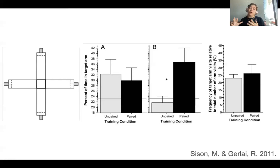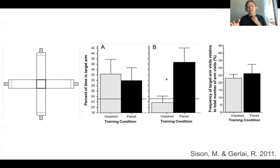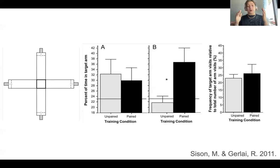In Panel C, we're looking at the frequency of target arm visits relative to the total number of arm visits between the paired and non-paired groups — the number of times they're crossing over into the arm, whether it is the target arm with the reward or not. You see that there's not a significant difference. So Panel B suggests there might be a significant difference between the paired and non-paired group in remembering where the reward is, but with this final panel, we're seeing that they are kind of searching — they don't really remember where the reward is.